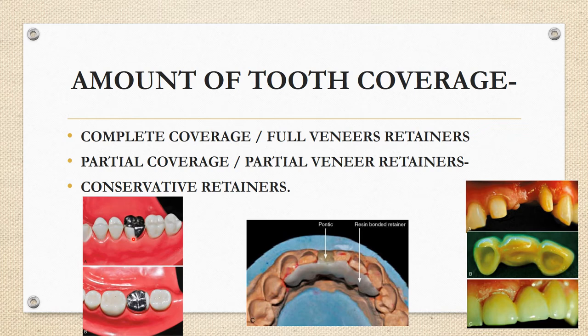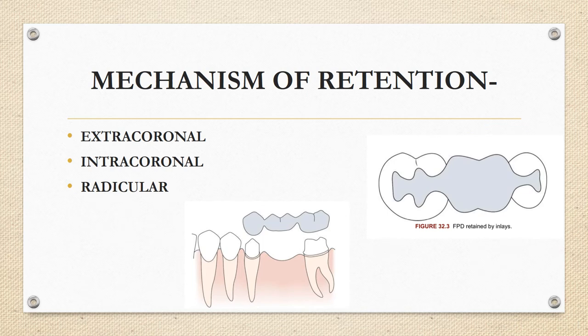Conservative retainers require minimal tooth preparation. These are resin-bonded retainers — the pontic is in the edentulous area and the retainers are prepared conservatively. They are primarily indicated for anterior teeth because of aesthetics, but they cannot accept high occlusal loads. They are basically used anteriorly for aesthetic cases.